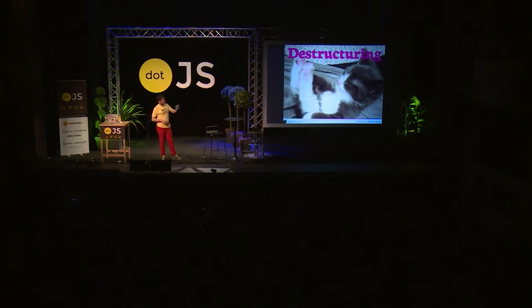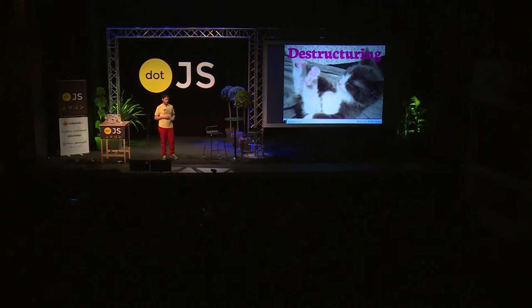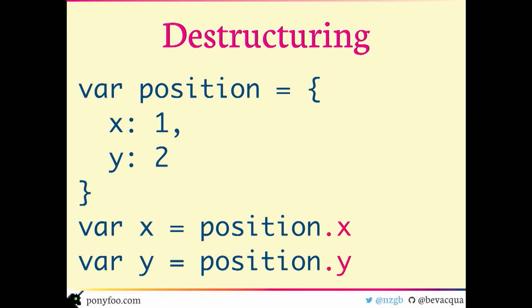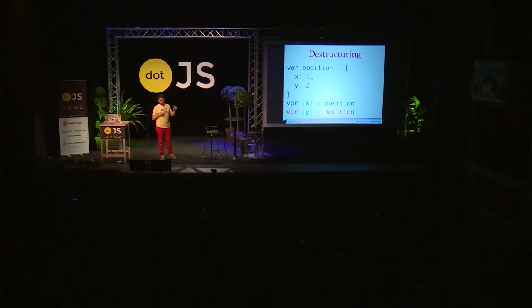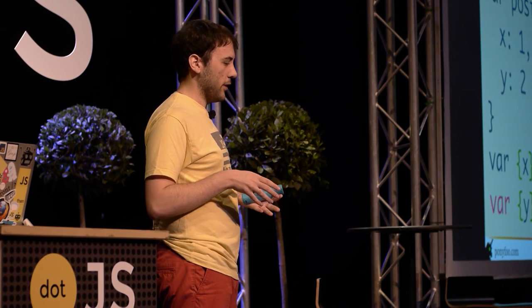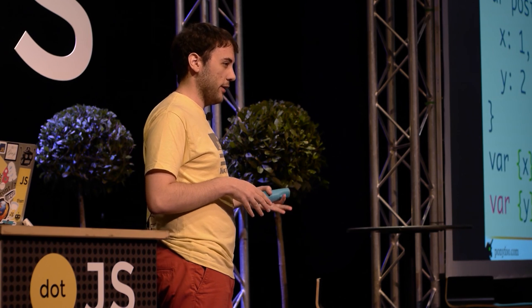There's also destructuring. Destructuring allows you to simplify variable declarations when you're trying to pull values or properties out of objects. For instance, if you're trying to pull X and Y from a position object, you can just drop the repeated right-hand-side property names and use curly braces around the variable declaration, so it will be implicit that you're referencing a property by the same name.